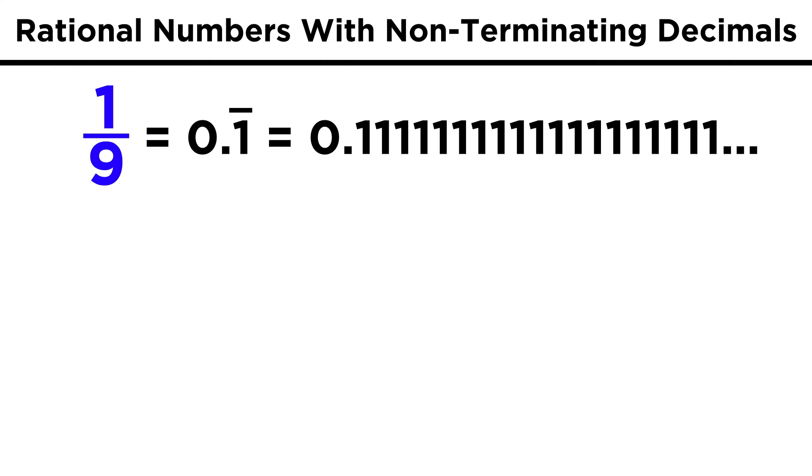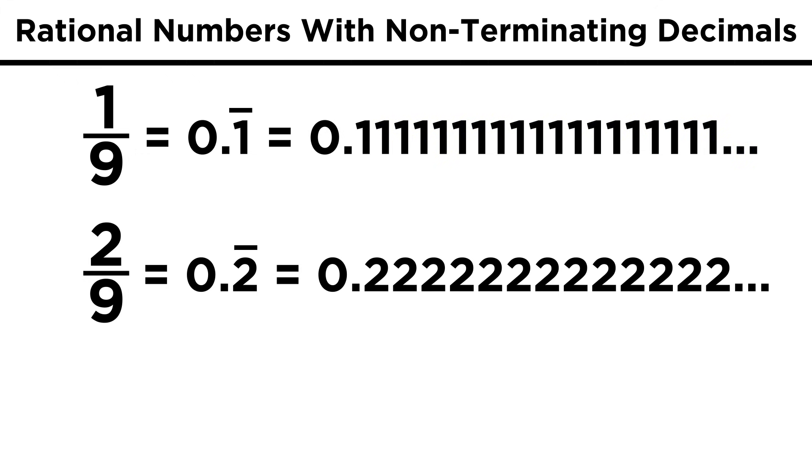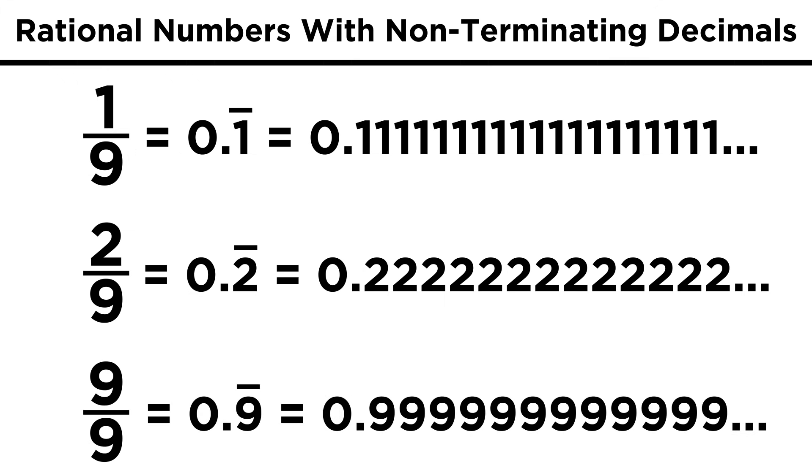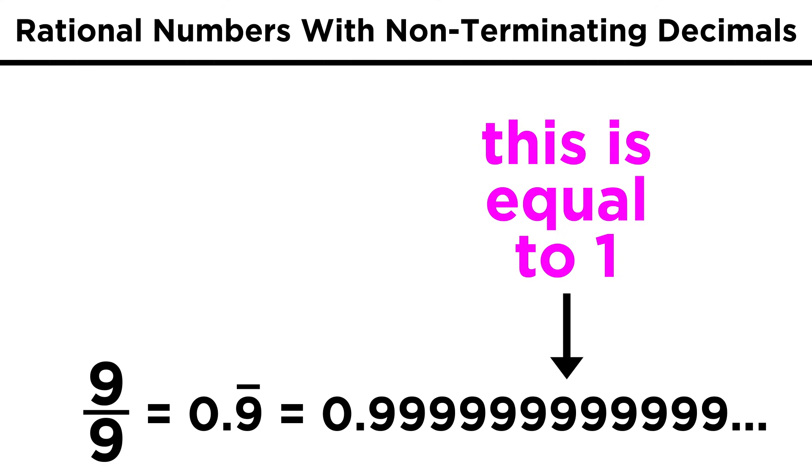Another example would be one ninth, or zero point one repeating. That's what this little bar means, whatever is under the bar repeats forever, in this case just the number one. Two ninths is equal to zero point two repeating, and this continues all the way up to nine ninths. That would be zero point nine repeating, and this is absolutely equivalent to one.